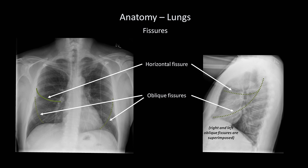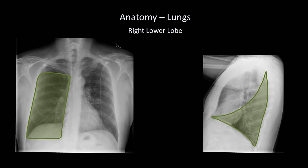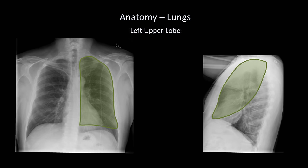Then there are the right and left oblique fissures, neither of which is usually visible in either view. Two fissures on the patient's right mean the right lung is divided into three lobes — the right upper, middle, and lower lobes — while one fissure on the left divides the left lung into two lobes. Because the oblique fissure runs obliquely on the lateral view, the lower lobe extends almost all the way to the apex of the lung. As a consequence, if only the PA or AP view is available without a lateral, it is almost impossible to tell what lobe a nodule or mass is located in.